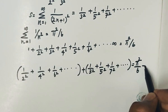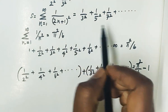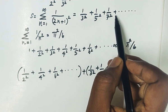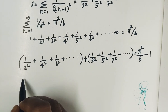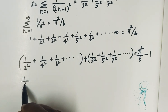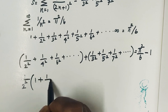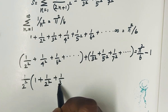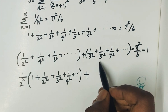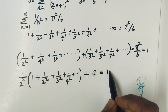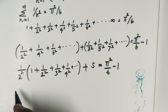So we isolate the odd terms: 1 by 3 square plus 1 by 5 square plus 1 by 7 square plus 1 by 9 square and so on, equal to pi square by 6 minus 1. Next step: the even terms 1 by 2 square, 1 by 4 square give us 1 by 4. Again, the series 1 by 1 square plus 1 by 2 square plus 1 by 3 square plus 1 by 4 square is the given problem equal to pi square by 6.